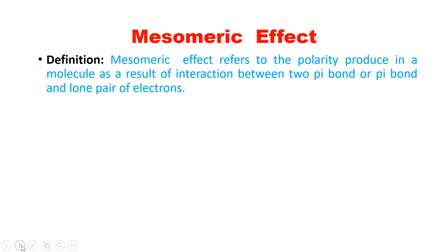Let us first see the definition of mesomeric effect. Mesomeric effect refers to a polarity produced in a molecule as a result of interaction between two pi bonds, or a pi bond and a lone pair of electrons.